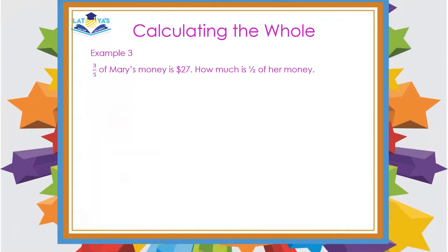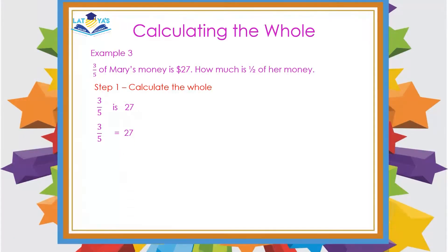Example 3 — this is a 2-step question. The question says that 3 fifths of Mary's money is 27. How much is half of her money? Step 1: we need to calculate the whole. The question told us that only 3 fifths of her money is 27. So 3 fifths of her money is equal to 27. To calculate the whole, we find the reciprocal of the fraction and multiply by 27. When multiplying, we always look for opportunities to reduce: 3 into 3 is 1, and 3 into 27 is 9. So we multiply 5 and 9 to get $45. What does $45 represent? It represents all of her money — 5 fifths of her money.